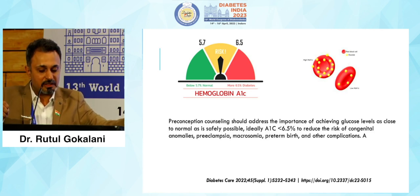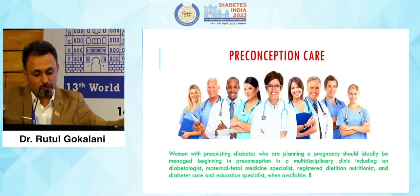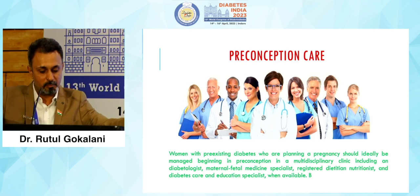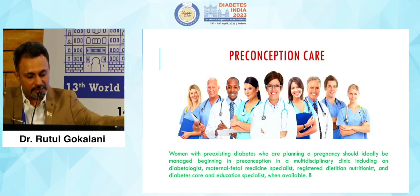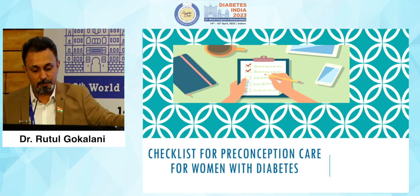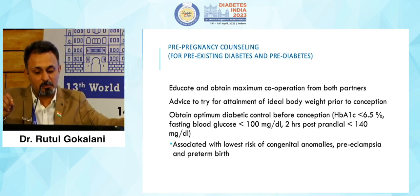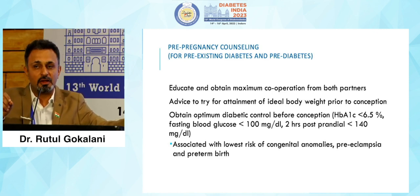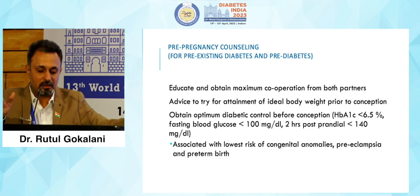This strict glycemic control reduces the risk of congenital anomalies, preeclampsia, macrosomia, preterm birth, and other complications. Preconception care for women with pre-existing diabetes should ideally be managed in a multidisciplinary clinic including a diabetologist or endocrinologist, maternal fetal medicine specialist, registered dietitian, nutritionist, and diabetes care and education specialist. The preconception checklist includes educating and obtaining maximum cooperation from both partners, and advising attainment of ideal body weight prior to conception — weight reduction is most important in type 2 diabetic patients.